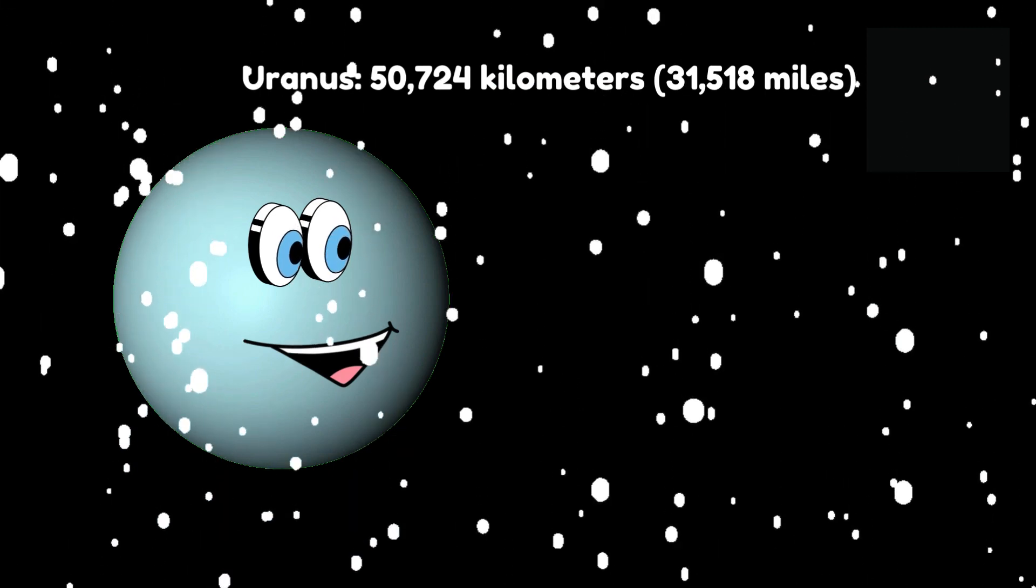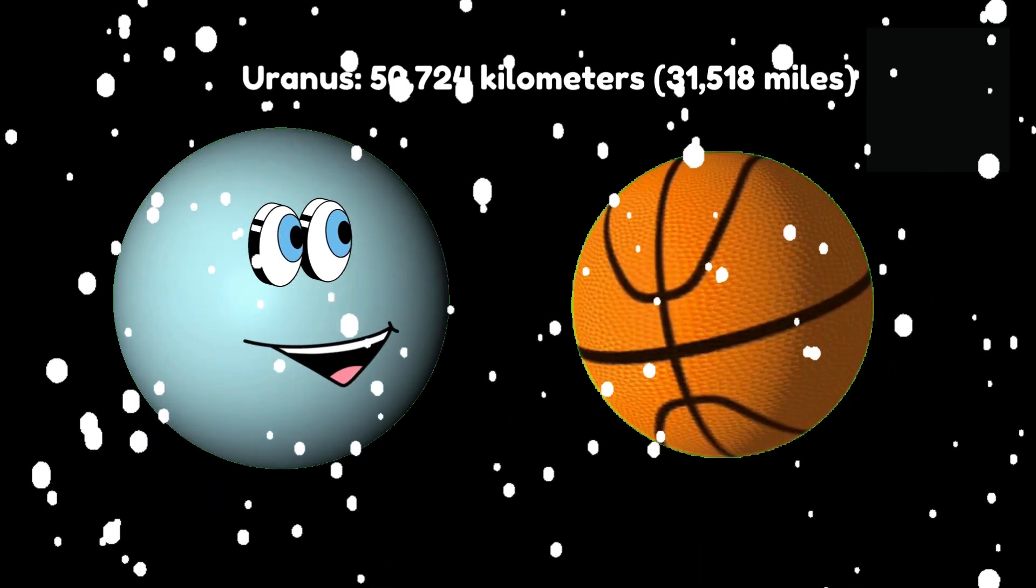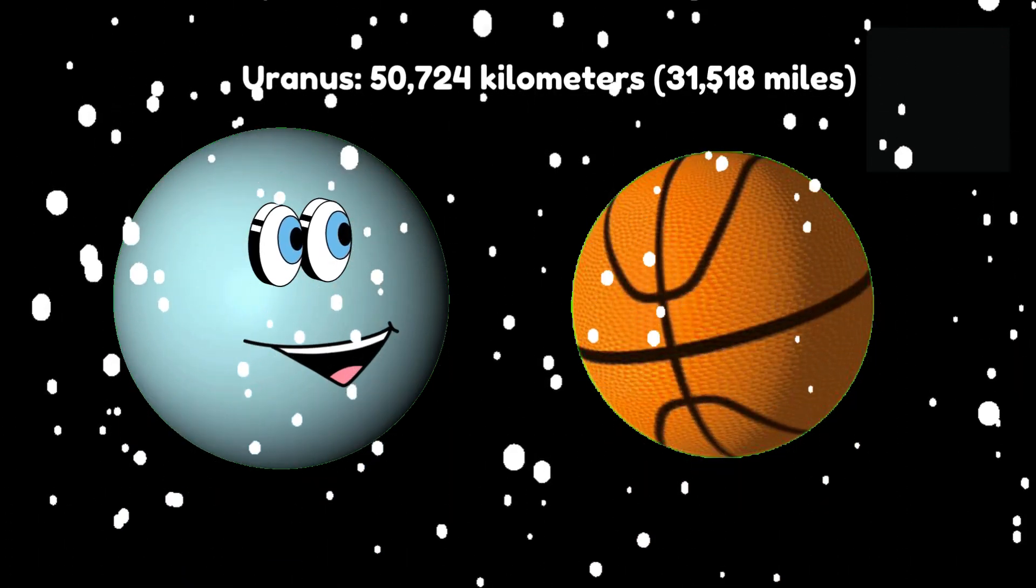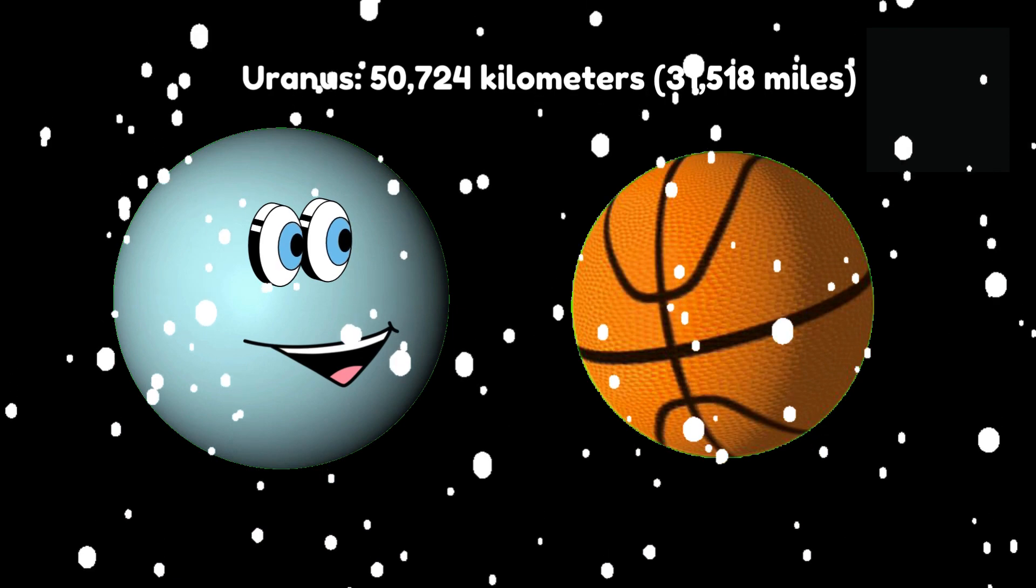Now, let's visit Uranus. This icy giant is about the size of a small basketball. Bouncing through space, Uranus is one cool cosmic athlete.